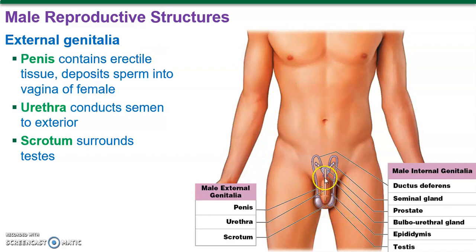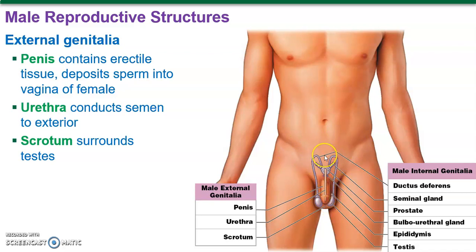The urethra in males is the combined exit of sperm and semen through the ejaculatory duct. The urinary bladder sits in front of much of this and also has an entrance into the urethra, so they combine pretty early on. The prostate is right here where they meet, and both share the same common tube in males.